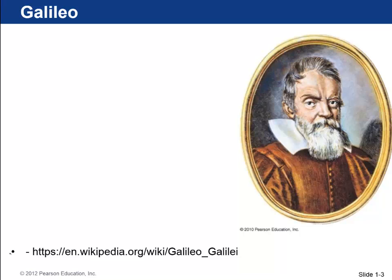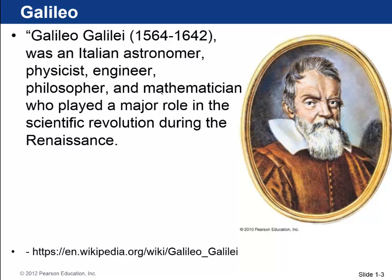We just mentioned Galileo. There's a picture of Galileo. It says on Wikipedia, Galileo, born in 1564, died 1642, was an Italian astronomer, physicist, engineer, philosopher, and mathematician. All those things.